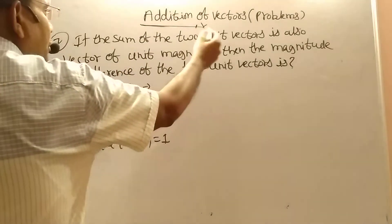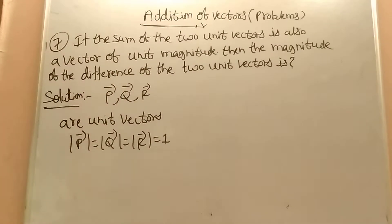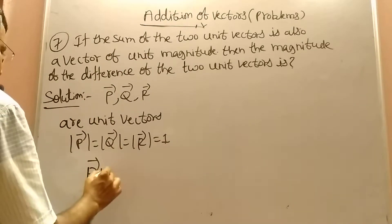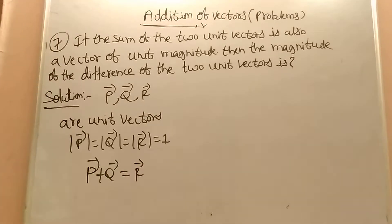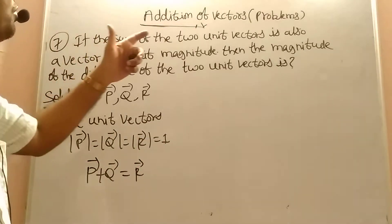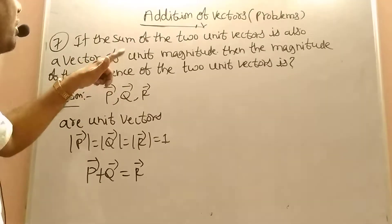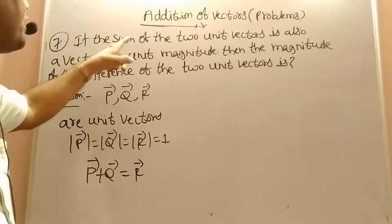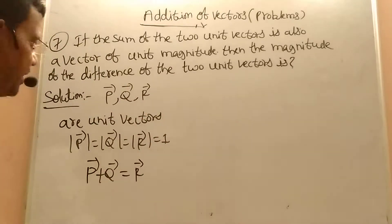Now, if the sum of the two unit vectors is also a vector of unit magnitude, the sum of the two vectors means P plus Q equals R. So that magnitude equals this magnitude. When we add these two unit vectors, we are getting again a unit vector — that is its meaning.